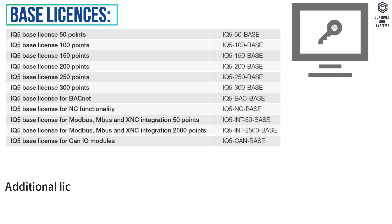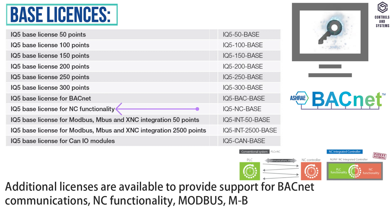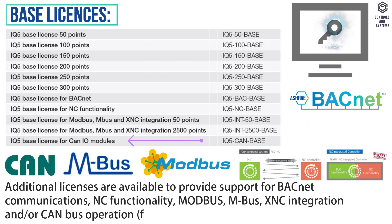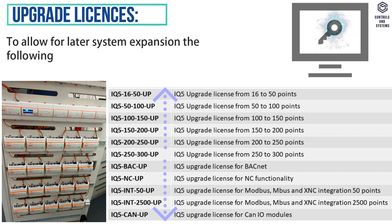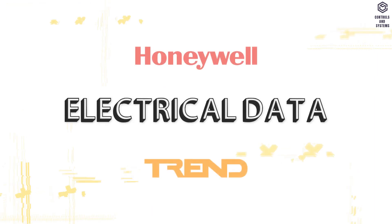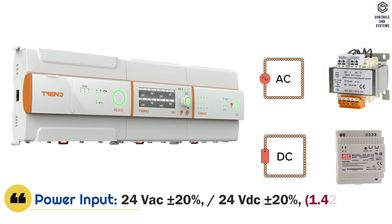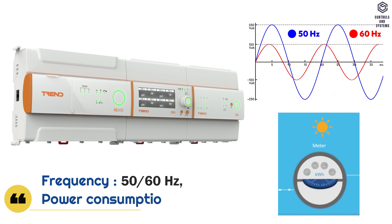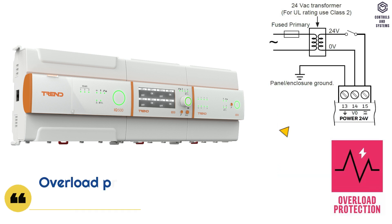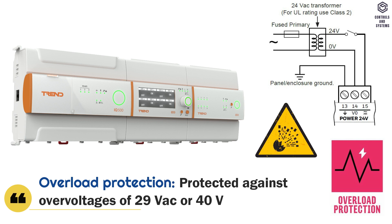Base license: additional licenses are available to provide support for BACnet communications, NC functionality, Modbus, MBus, XNC integration, and ORCN bus operation. Upgrade licenses: to allow for later system expansion, the following upgrade licenses are available. Electrical data: power input is 24V AC or 24V DC ±20%, frequency is 50 to 60 Hz, power consumption is 34 VA maximum, and overload protection is protected against over-voltages of 29V AC or 40V DC.